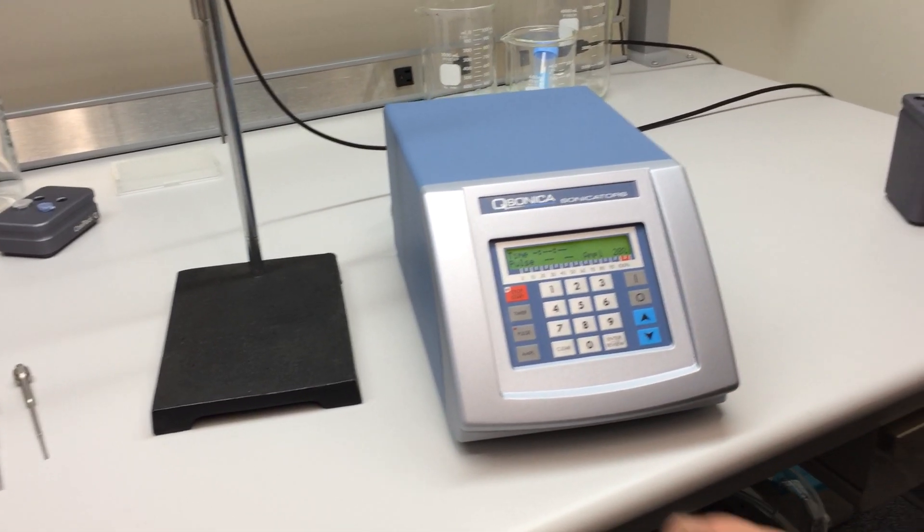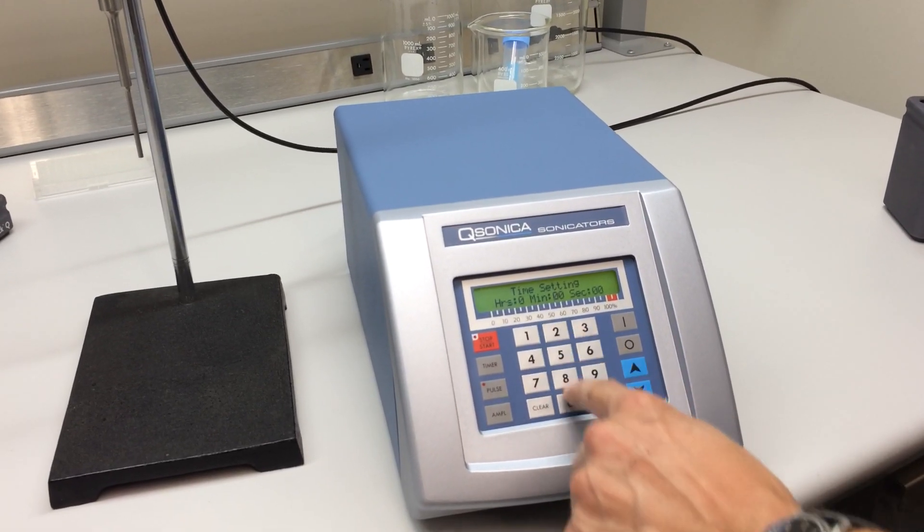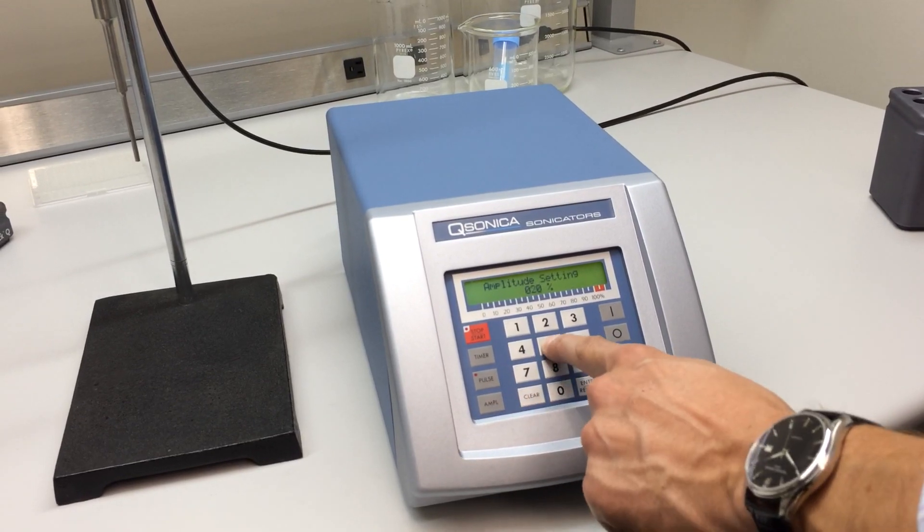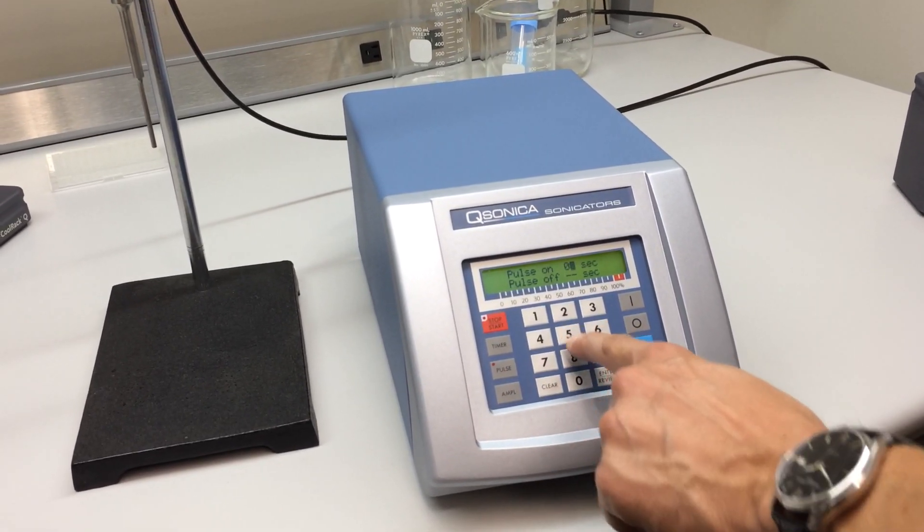For example, we can program the unit for a 2 minute sonication time, set the amplitude or intensity to 50%, and enter a 5 second on, 5 second off pulse mode.